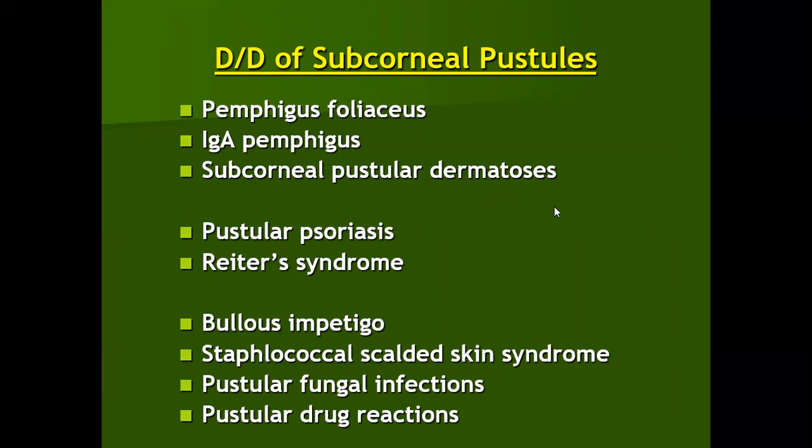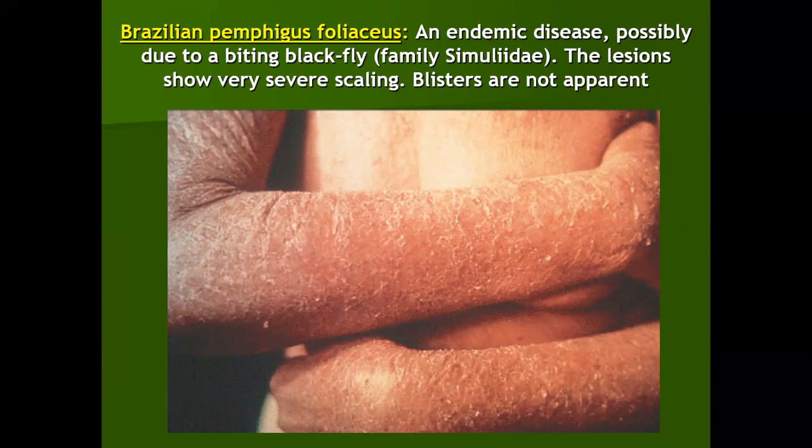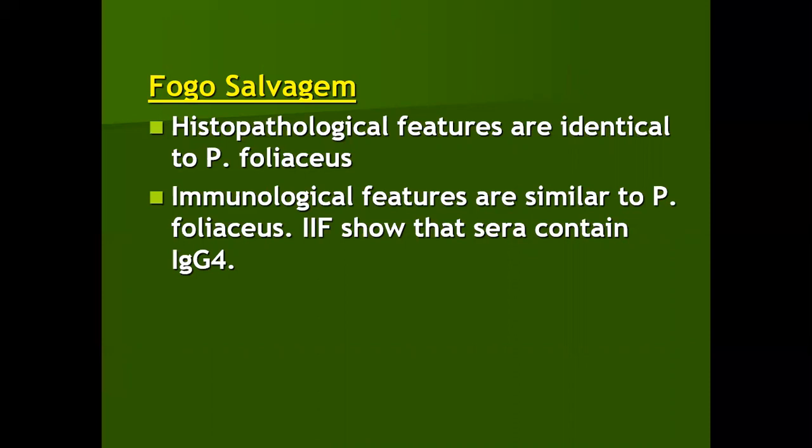Brazilian pemphigus foliaceous, or endemic pemphigus (Fogo Selvagem), is an endemic disease caused by biting of a black fly belonging to the family Simuliidae. The lesions show very severe scaling and blistering is not apparent. Histopathologically, Fogo Selvagem is identical to pemphigus foliaceous. The clinical picture, immunofluorescence features, and indirect immunofluorescence findings are all similar to pemphigus foliaceous.